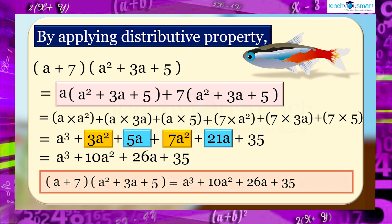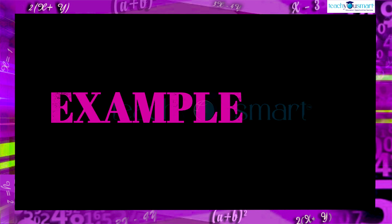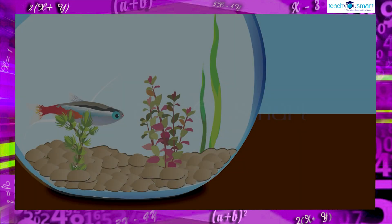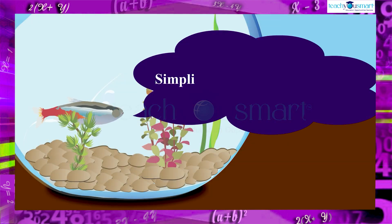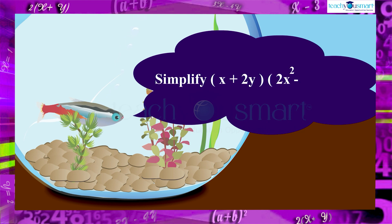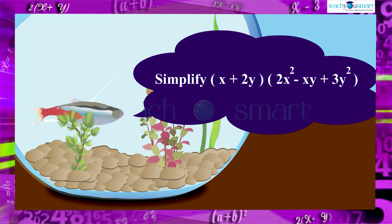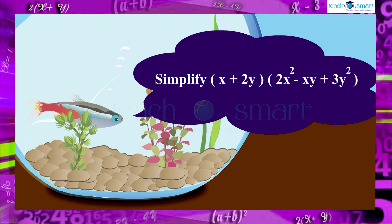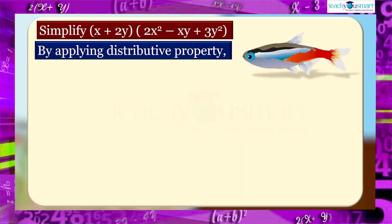Let's do one more example. Simplify (x + 2y) multiplied by (2x² - xy + 3y²). By applying the distributive property, (x + 2y) multiplied by (2x² - xy + 3y²).